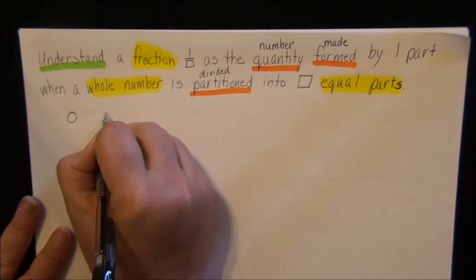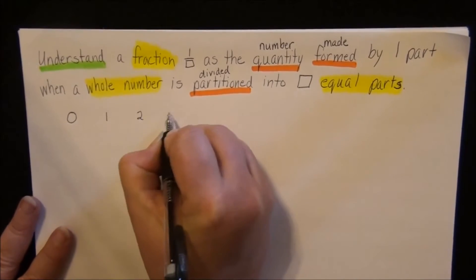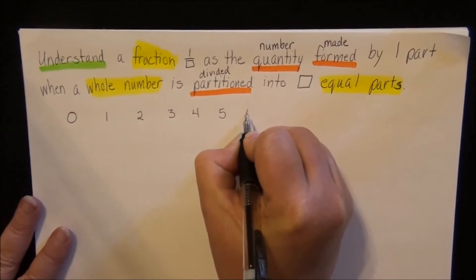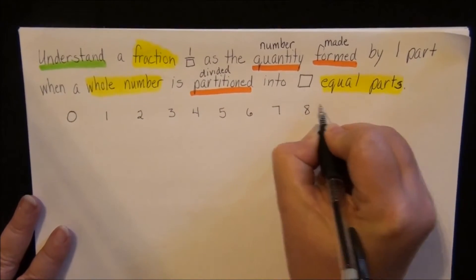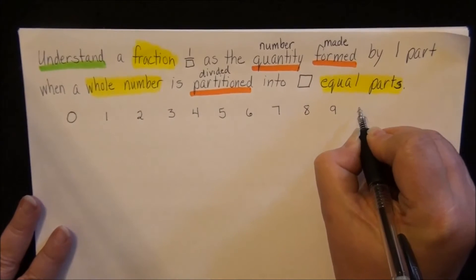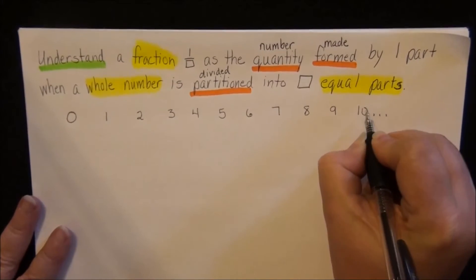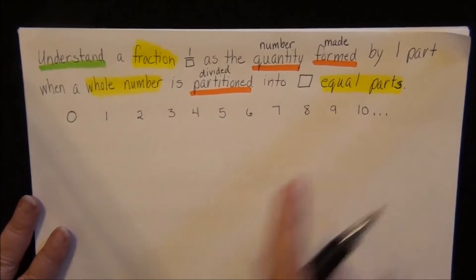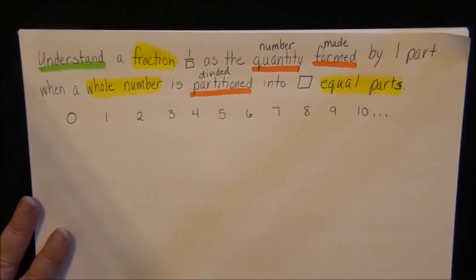There are other numbers here, but we're not going to worry about those in third grade. So we start with zero, we have one, and two, and three, and four, and five, and six, and seven, and eight, and nine, and ten, and it goes on and on and on to infinity. But we're going to just look at these numbers just for this moment.